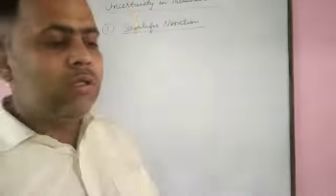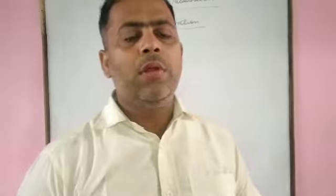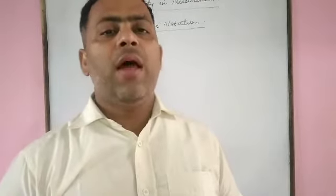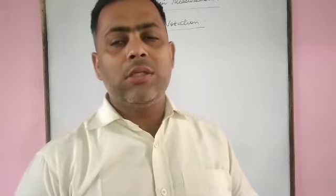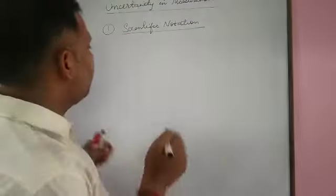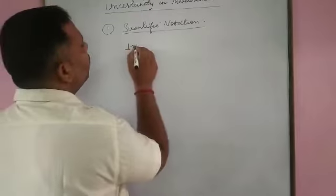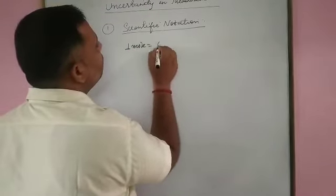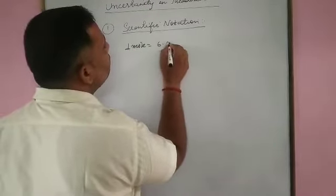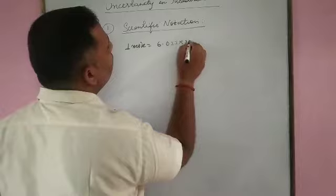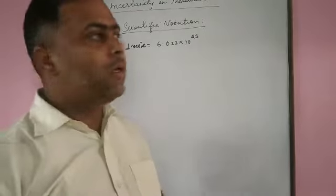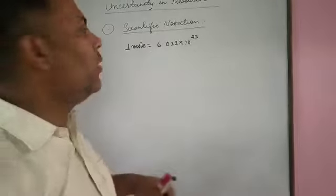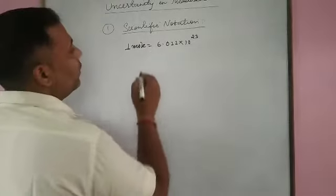In scientific notation, in chemistry, we are using quantities having large values. For example, if we are discussing one mole — one mole is equal to 6.022 into 10 to the power 23. If we are not going to represent it in the standard form, then how can we write it?